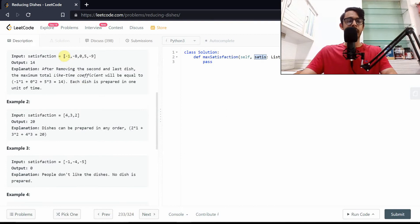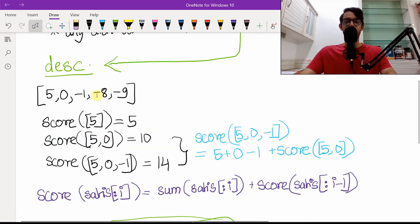In a case like the one given here - minus one, minus eight, zero, five, minus nine - we'll first sort all of these things and then we'll take note of what happens to the answer, which is the score of this particular array.